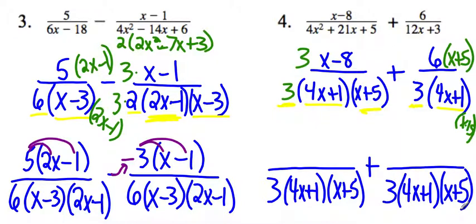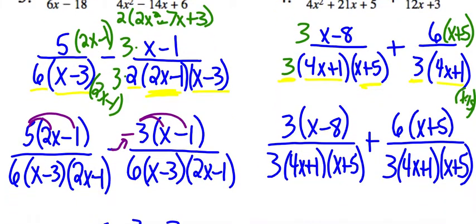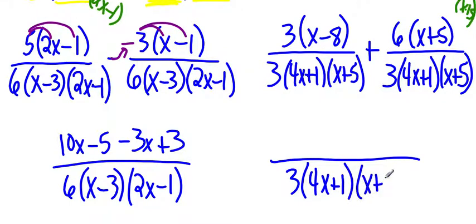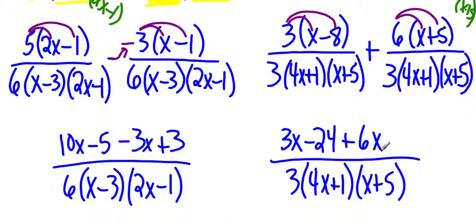So now let's rewrite our numerators. We have 3 times x minus 8 and 6 times x plus 5. Now that we have our denominators the same, we can combine into one fraction. Common denominator stays the same. We are going to distribute. So that gives us 3x minus 24. And this is a plus 6, so I don't have to worry about it. Remember last time I had the negative I had to deal with? Just distribute that positive 6. So 6x plus 30.